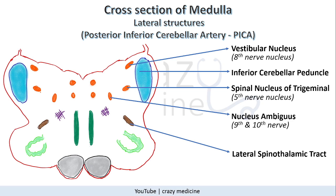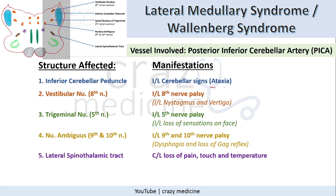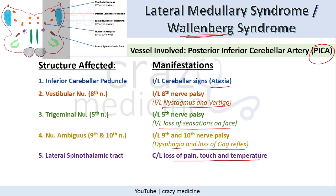Next is the cross-section of the medulla showing lateral structures. It includes the 8th nerve nucleus (vestibular nucleus), inferior cerebellar peduncle, spinal nucleus of the 5th nerve (trigeminal nerve), nucleus ambiguus — that is the 9th and 10th nerve nucleus — and the lateral spinothalamic tract. Manifestations include ipsilateral ataxia (cerebellar signs), ipsilateral nystagmus and vertigo, ipsilateral loss of sensation on the face, dysphagia and loss of gag reflex due to involvement of the 9th and 10th nerve nuclei, and loss of pain, touch and temperature due to involvement of the lateral spinothalamic tract. This is known as lateral medullary syndrome, also known as Wallenberg syndrome, and the vessel involved is PICA — the posterior inferior cerebellar artery.